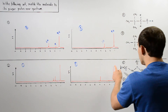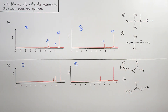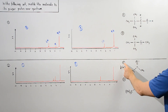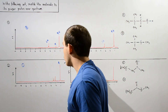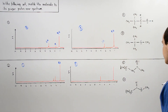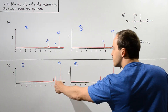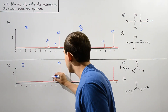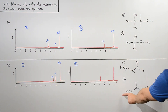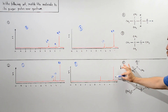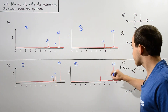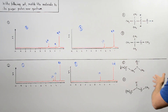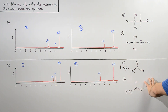Since molecule C has three signals, that spectrum must correspond to C, and the other must be D. The question is which signal corresponds to which H atoms in molecule C. The most intense signal corresponds to the H's found in greatest quantity — that means the highest signal corresponds to the nine H's. For the remaining two H's and three H's, the higher signal corresponds to the greater quantity, so the three H's correspond to the next signal and the two H's correspond to the smallest signal.